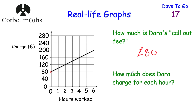The next part asks: how much does Dara charge for each hour? We've got £80 for a zero-hour job, £100 for one hour, £120 for two hours, £140 for three hours. As you can see, it's getting bigger by £20 each hour - every single hour it goes up by £20. So how much does Dara charge for each hour? The answer is £20.